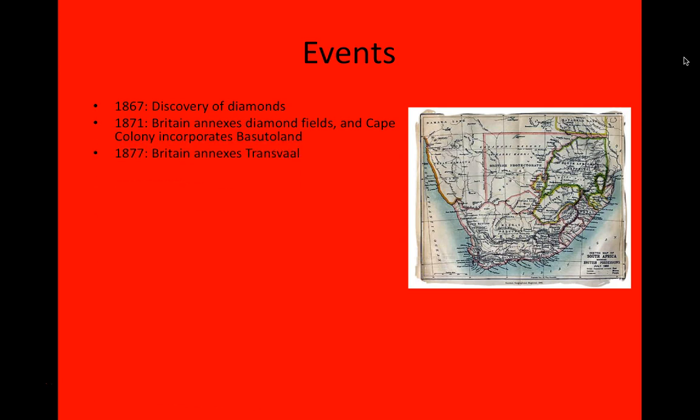In 1877, Britain decided to annex the Transvaal, or what is labeled here on the map as the South African Republic. We will talk in later discussions about why that was the case and how that happened. But Britain was in a mood to expand, to stretch its empire, and we will have a discussion about the causes behind that.